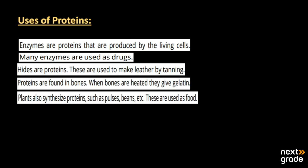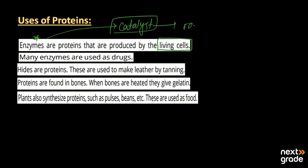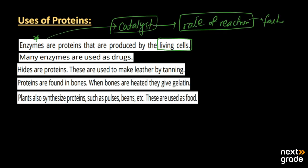Now for the uses of proteins: all enzymes are proteins, and they are produced by living cells. Enzymes work as catalysts — catalysts are substances that increase the rate of a reaction. By increasing the rate of reaction, the reaction takes place faster compared to a reaction without a catalyst. All the enzymes working in our body are proteins in nature.